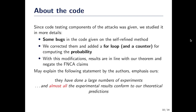Once we did this experiment, we went back to the code provided for the attack against A5-1, which was supposed to test some components of the attack. We found some bugs in this code, corrected them, added a for loop and a simple counter to compute the probability of the self-refine method — the probability that the good value is in the set after the self-refine method. When we ran that, we obtained results in line with our theory and not the theory of the Fast Near Collision Attacks, which may explain the authors' statement that almost all their results matched the theory.